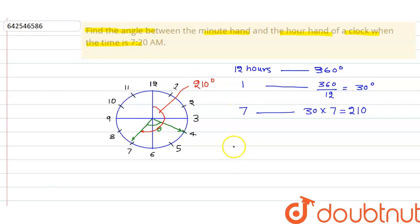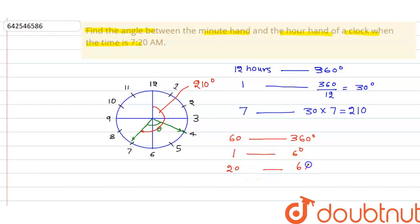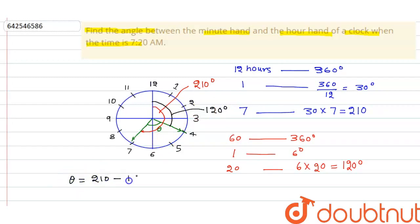We also know that the minute hand makes 360 degrees in 60 minutes, that means in 1 minute it makes 6 degrees. Now in 20 minutes, this makes 6 × 20 = 120 degrees. So this angle is equal to 120 degrees. Then this theta angle can be found as 210 minus 120, which equals 90 degrees.